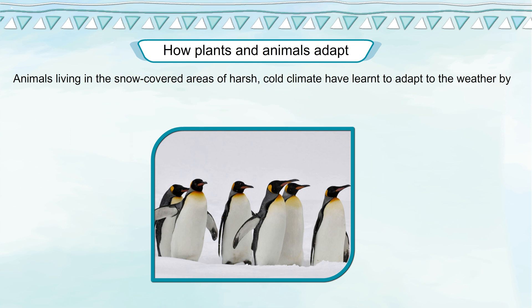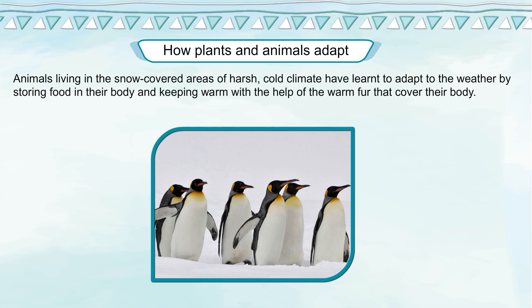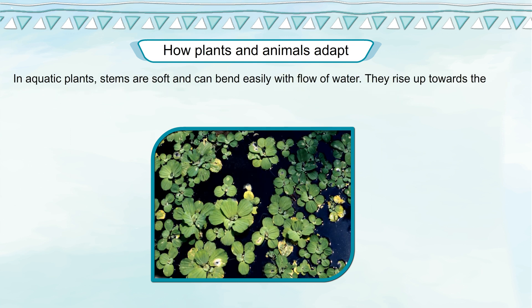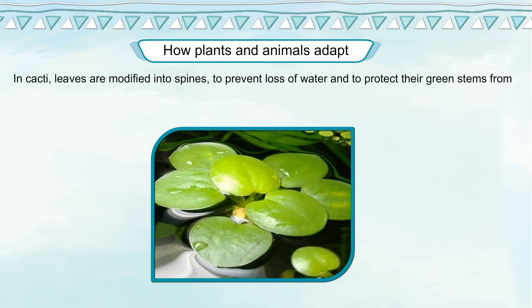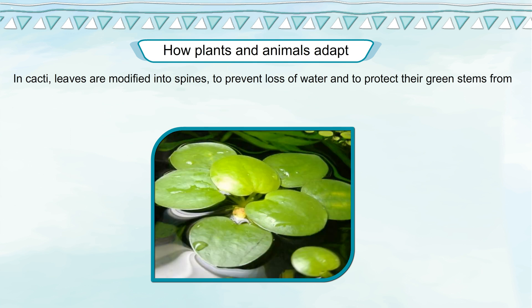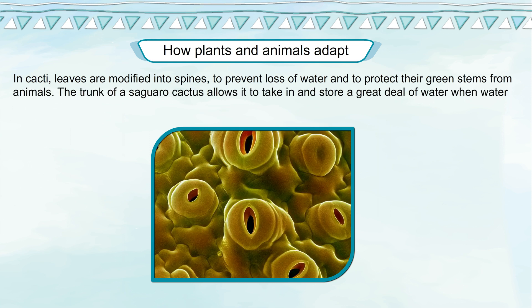Animals living in snow-covered areas of harsh, cold climates have learned to adapt to the weather by storing food in their body and keeping warm with thick fur. In aquatic plants, stems are soft and can bend easily with the flow of water; they rise up towards the surface so that the leaves can get sunlight. In cold climates, tree leaves are thin and pointed so snow doesn't accumulate on them. In cacti, leaves are modified into spines to prevent loss of water and to protect the plant. The trunk of a saguaro cactus allows it to take in and store a great deal of water when water is available.